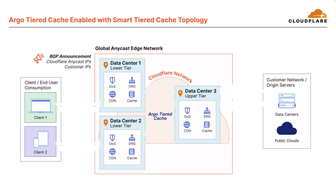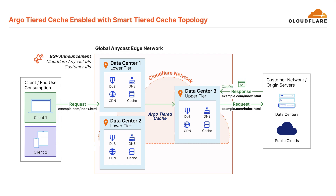Here again, we have Cloudflare CDN but with Argo Tiered Cache using the Smart Tiered Cache topology. When Client 1 sends a request to data center 1, if the content is not cached, the upper tier data center — labeled data center 3 here — is checked. If the content is not cached at the upper tier, the upper tier requests the content from the origin. Once the response is returned from the origin, the upper tier caches it and returns the response to the lower tier, which also caches it and returns the response to the client.